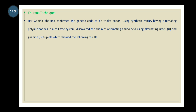After that, Hargobind Khorana's technique confirmed that the genetic code is a triplet code by using synthetic mRNA having alternating polynucleotides in a cell-free system. He discovered chains of alternating amino acids using alternating uracil and guanine triplets.